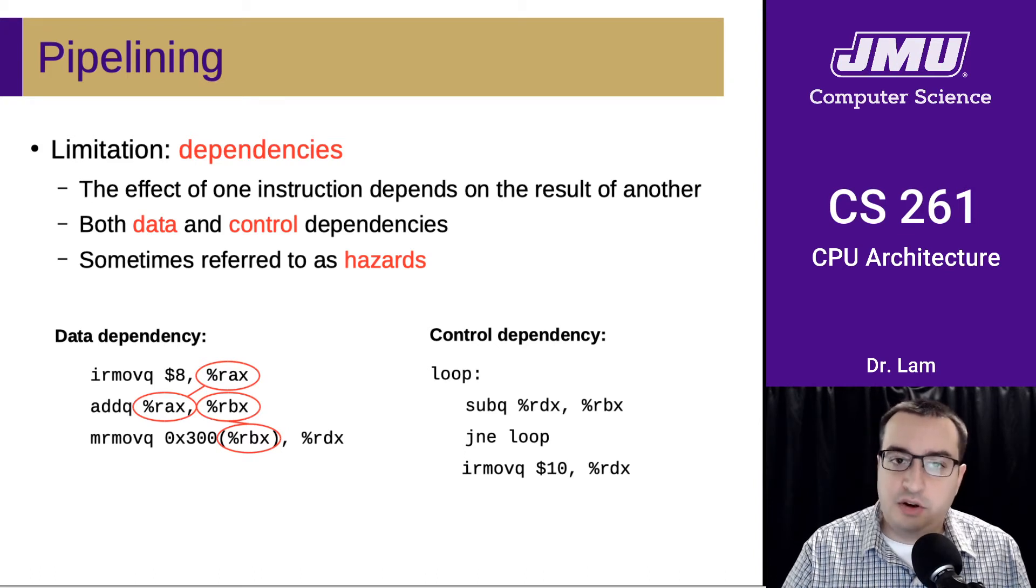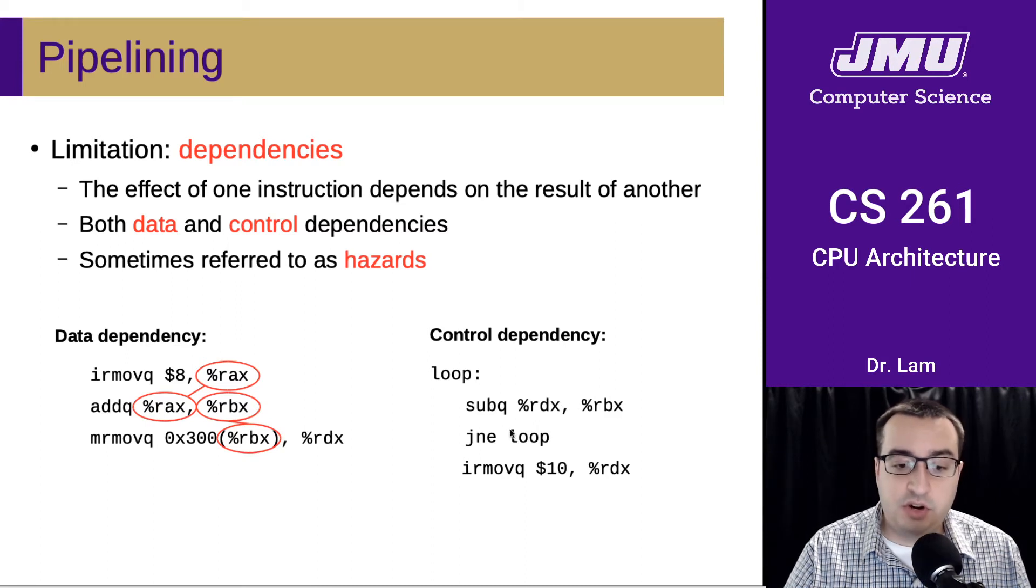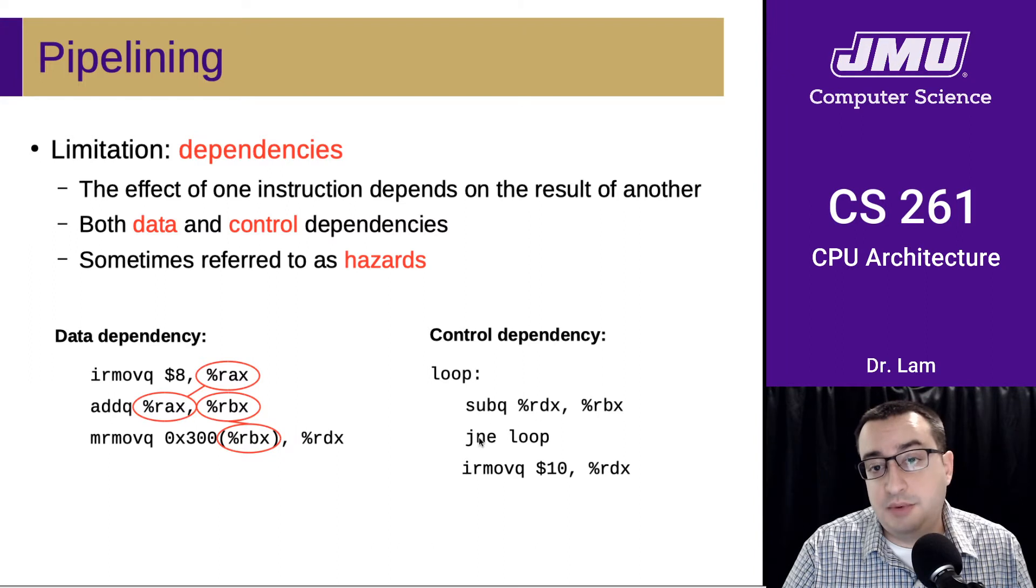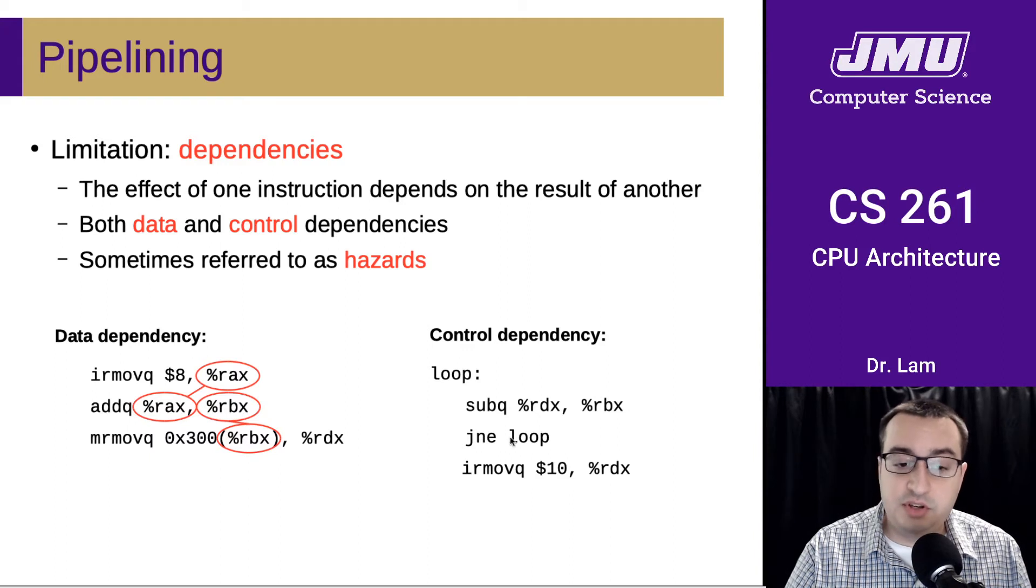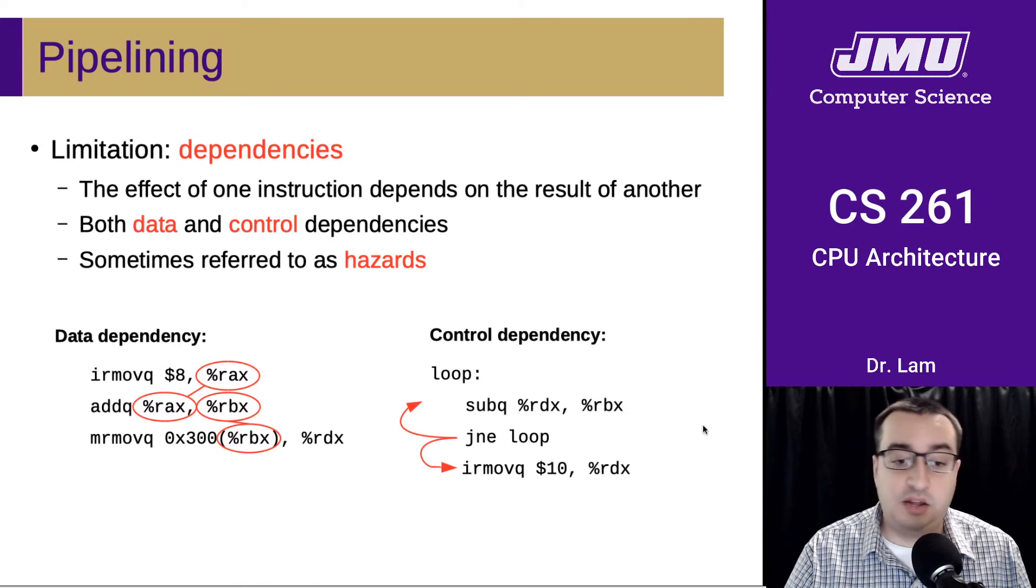Control dependencies are a little bit more subtle. Here's an example of a control dependency. We do a subtraction instruction and then based on the results of that subtraction - that's a data dependency as well - but the other problem here is that we don't know whether or not we're going to take this jump until we actually look at the condition codes. So we can't go ahead and start executing this instruction or this instruction until we know which one we're actually going to execute. That's an example of a control dependency.